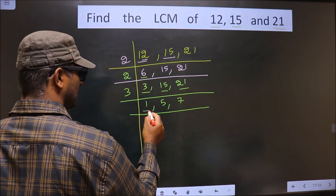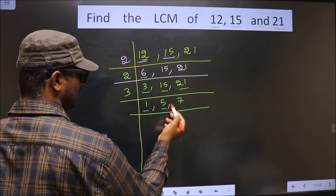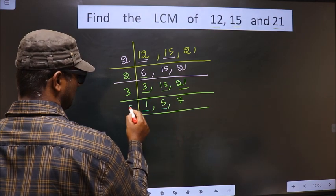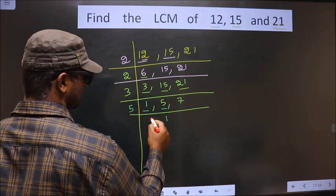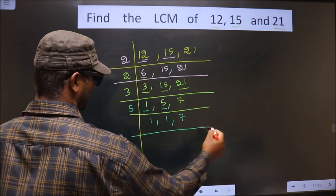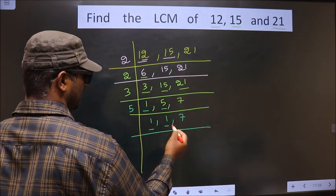Now here we got 1, so now focus on to the next number that is 5. 5 is a prime number, so we take 5 once 5. Now we got 1 here and here.